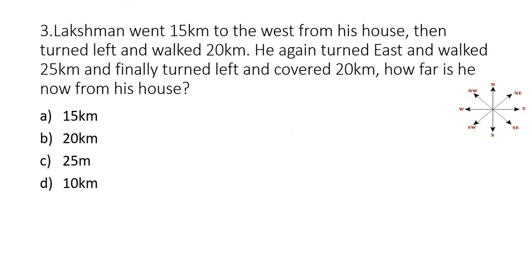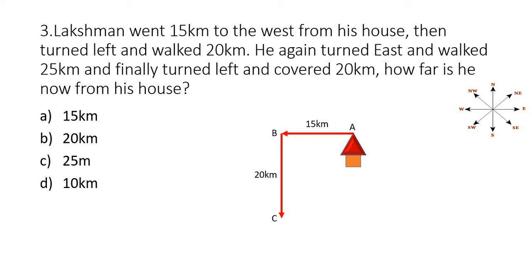Let's move to the next example. Lakshman went 15 kilometers to the west from his house, then turned left and walked 20 kilometers. He again turned east and walked 25 kilometers, and finally turned left and covered 20 kilometers. How far is he now from his house? I'm assuming Lakshman's house as the starting point A. He went 15 kilometers west — marking endpoint B. He turned left and walked 20 kilometers south — marking as C. He turned east and walked 25 kilometers — marking as D. Finally turned left and covered 20 kilometers — marking the final point as E.